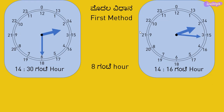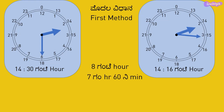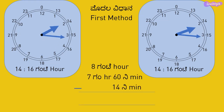However, 14:16 is 14 minutes before 14:30, so we need to subtract 14 minutes from 8 hours. We can write 8 hours as 7 hours 60 minutes, and then subtract 14 minutes from 60 minutes to obtain 46 minutes. Thus, the time duration will be 7 hours 46 minutes.